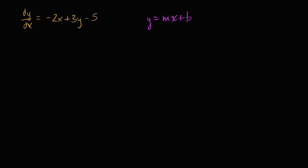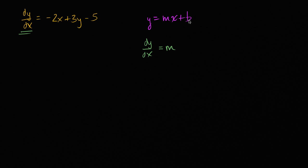Let's figure out first what our dy/dx is. We'll take the derivative of mx plus b with respect to x. The derivative of mx with respect to x is just m, and the derivative of b with respect to x is just zero, since it's a constant. So dy/dx equals m.